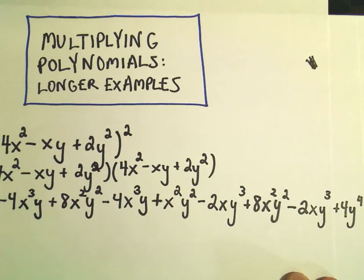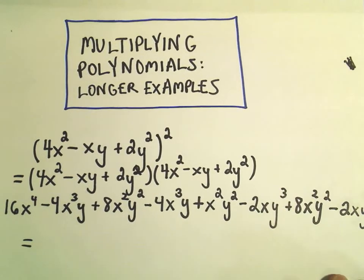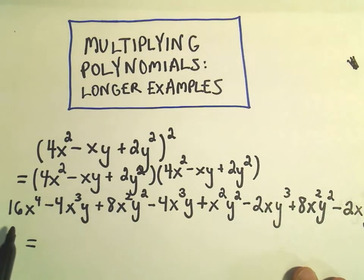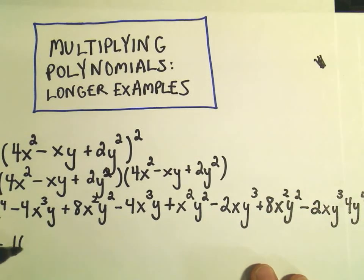So now it's just a matter of collecting all of our like terms here. So let me come back over here for just a second. So there was a 16x to the fourth. That was the first term. I don't see any other just x to the fourth terms. So I'm going to drop that one right down.